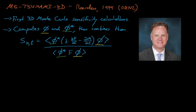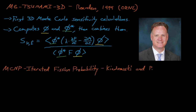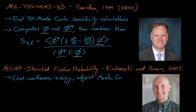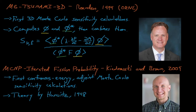Work on sensitivity coefficients continued in 2009 in the MCMP code, where Kudrowski, a PhD student at Wisconsin, and Brown developed the first method for estimating adjoint weighted eigenvalue sensitivity coefficients in a continuous energy Monte Carlo code. Riordan's multi-group Tsunami approach wouldn't work in continuous energy Monte Carlo, because continuous energy scattering kinematics data could not be easily transposed. But Kudrowski's Iterated Fission Probability method, which was based on work by Hurwitz from 1948, provided an alternative — and to be honest, a very elegant approach for estimating adjoint weighted tallies.